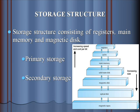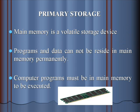Storage Structure: Storage structure consists of registers, main memory, and magnetic disk. It is divided into Primary Storage and Secondary Storage. Primary Storage: Main Memory is a volatile storage device. Programs and data cannot reside in main memory permanently. Computer programs must be in main memory to be executed.